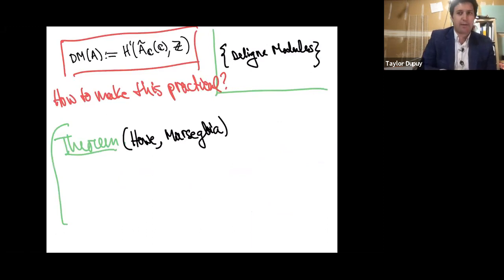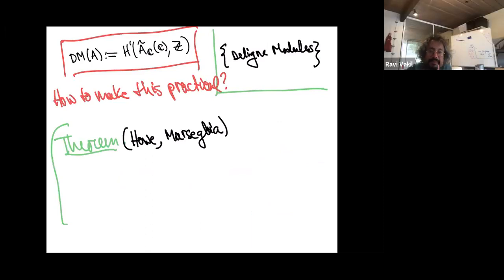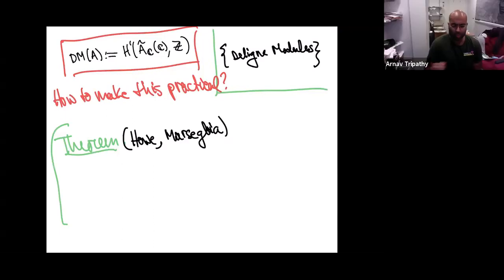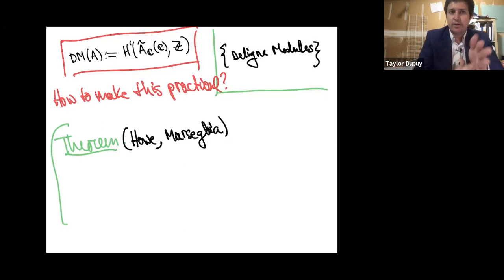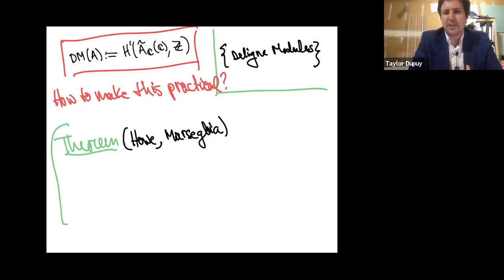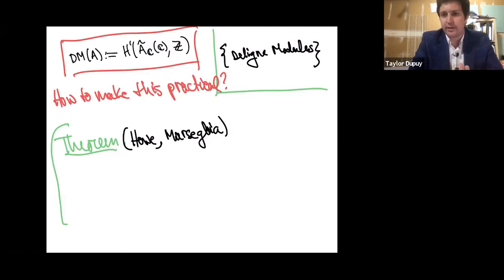What we want is a way of practically computing all of these Deligne modules. This was started by Everett Howe in the nineties and Stefano Marseglia around 2017. There's a question about why we go to the complex numbers rather than Z_P. If you did it with Z_P coefficients, you can still tensor, and tensoring up to Z_L compares with the Tate module. I think if you do it with Z_P you get the p-divisible group. The proof of the equivalence definitely goes through Tate's theorem and the Honda-Tate theorem.